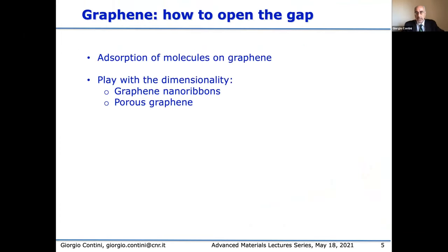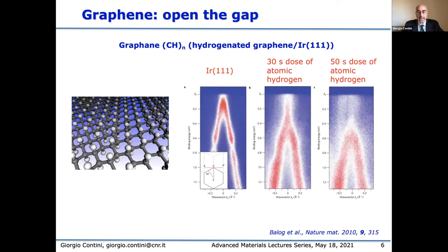The fact that graphene does not have an open gap is a problem if we want to use graphene as an active medium in semiconductor devices. There are some methods to open the gap in graphene, mainly by absorption of molecules or by playing with the dimensionality. Here is an example: it is possible to put some hydrogen on the graphene. This is the ARPES map of graphene showing electrons close to the Fermi level, but if we put some hydrogen on graphene, we can see the opening of the gap.